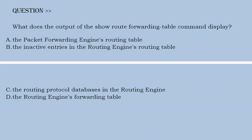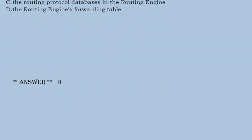Next question is, what does the output of the show route forwarding-table command display? Option A, the packet forwarding engine's routing table. Option B, the inactive entries in the routing engine's routing table. Option C, the routing protocol databases in the routing engine. Option D, the routing engine's forwarding table. Correct answer is option D.